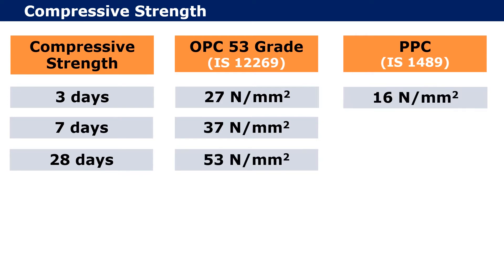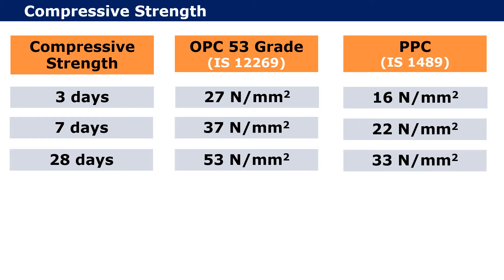For PPC at 3 days, it achieves a compressive strength of 16 N/mm². At 7 days, PPC achieves 22 N/mm². And at 28 days, PPC achieves a compressive strength of 33 N/mm². You must note that the initial strength of Ordinary Portland Cement is higher than Portland Pozzolana Cement.